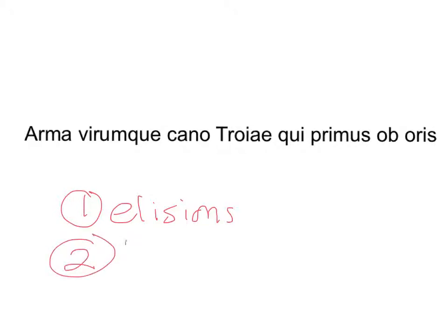My next step is to find the longs. Syllables can be long either by nature, which means the syllable is always long — for example, the long I in 'hinc' meaning 'here,' or the long O of the first person singular verb ending, or the long E in the perfect stem for the verb 'to come.' Those kinds of things are long by nature. Also long by nature are diphthongs.